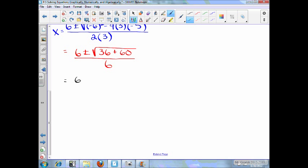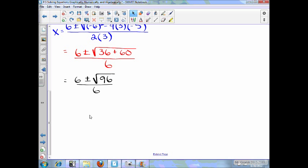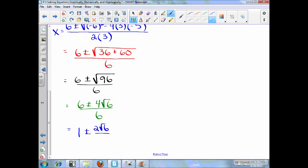Simplifying further, we have this. Now, as we keep going, 96 is divisible by 16. So really, what's going to end up happening is when we simplify this even further, we'll end up having 6 plus or minus 4 square root of 6 over 6, which will simplify to 1 plus or minus, it'll end up being 2 square root of 6 over 3.